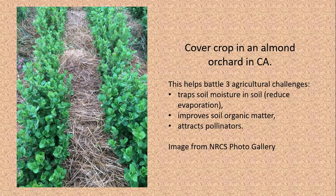These cover crops help to attract pollinators, and that's really important in many agricultural areas because we do have a shortage of bees right now. These pollinators help to pollinate crops so that you get a higher yield. This is a picture of an almond orchard in California — just a close-up of the ground showing the cover crop and mulch that's present.